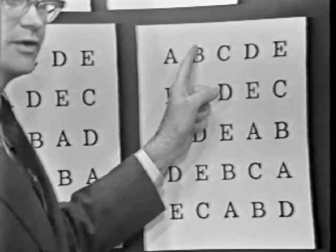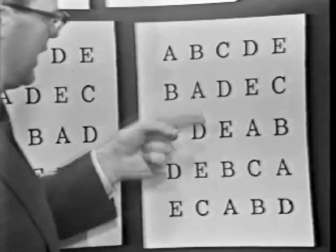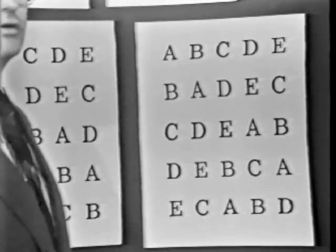You'd randomly assign the individuals to the columns and the days to the rows, and then you would assign the treatments randomly to the letters. And by this fashion, you bring in randomization into the selection of your Latin square design.